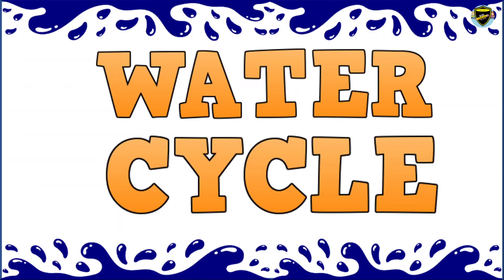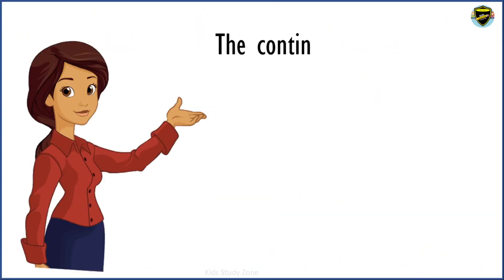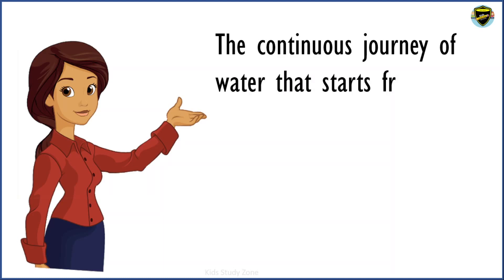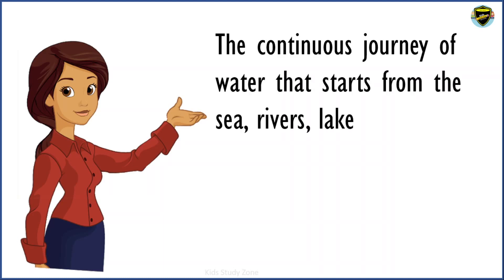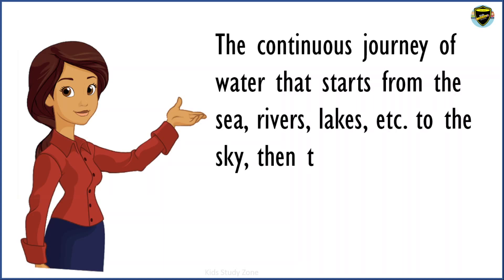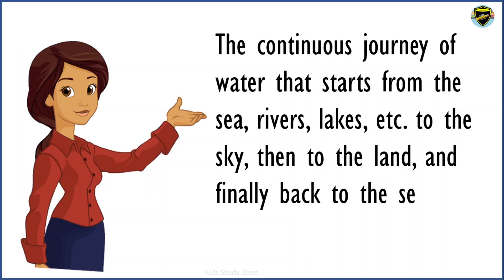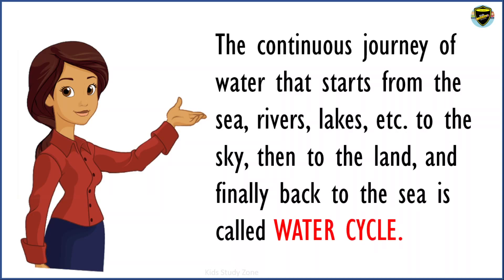What is a water cycle? The continuous journey of water that starts from the sea, rivers, lakes, etc., to the sky, then to the land and finally back to the sea is called the water cycle. Now let us understand this with the help of some pictures and diagrams.